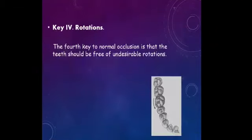Fourth key: rotation. The fourth key to normal occlusion is that the teeth should be free of any kind of rotation. Because as we all know, if there is rotation present in anteriors, they will occupy less space, and if the rotation is present in posteriors, they will occupy more space.